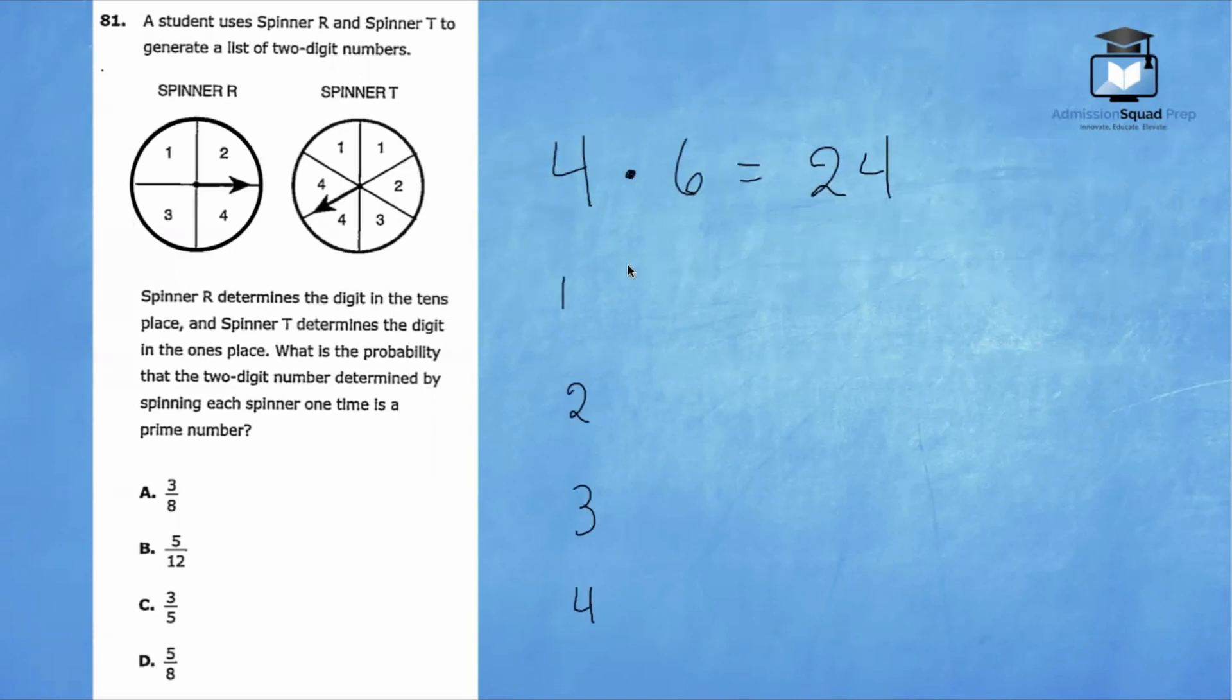Now we need to identify how many of those 24 possibilities will give us a prime number. Let's list our sample space. If the spinner landed on 1 and then landed on 1 again, you could get 11, 11, and 13. So those would be three chances if it started off with 1. If spinner R landed on 2, then the only value for spinner T that would yield a prime number is 3, and that can happen only one time, because 21 is composite, so is 21, 22 is also composite, and 24 is also composite. So 23 is the only prime number that starts with 2.